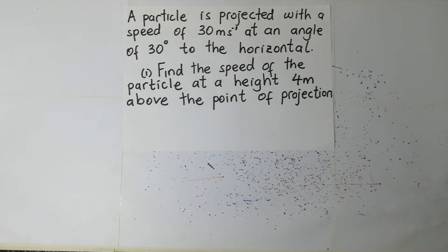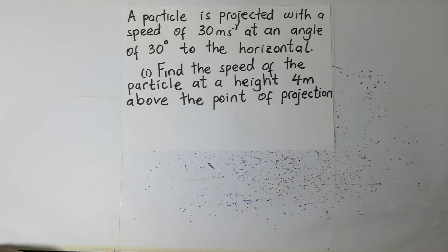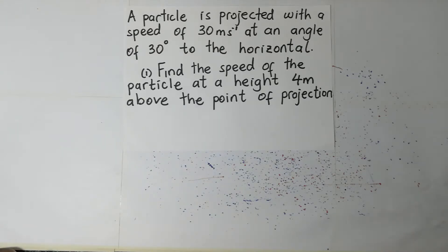A particle is projected with a speed of 30 meters per second at an angle of 30 degrees to the horizontal. Let's summarize this question with a diagram. This is the question we are going to solve in this session, and let's get started.